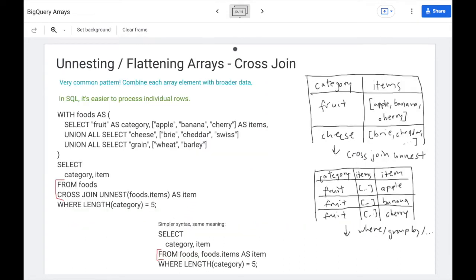Now, here is the most common pattern you'll encounter when dealing with arrays. So at some point, you'll have a very complex denormalized schema. What if, for instance, you want to combine every array element with a broader piece of data? So the example here is we have foods split by category. So fruit, we have apple, banana, cherry, cheese, brie, cheddar, Swiss, and so forth.